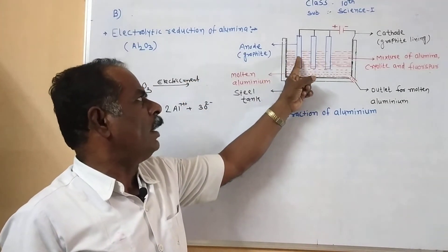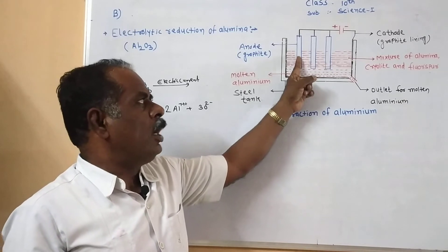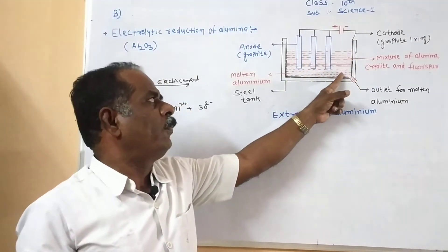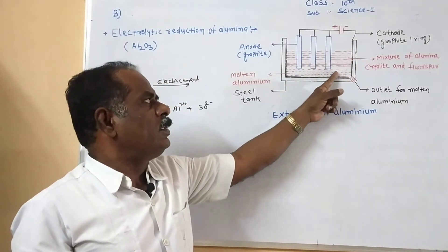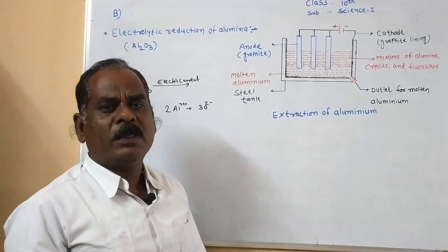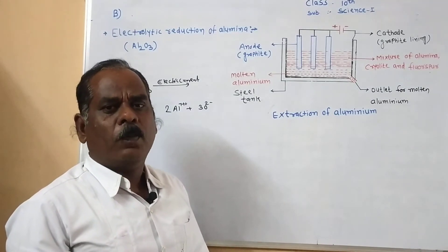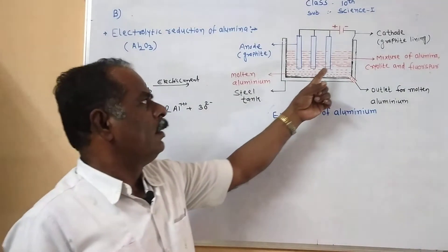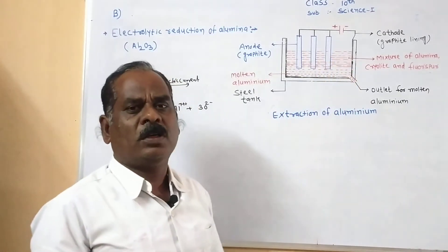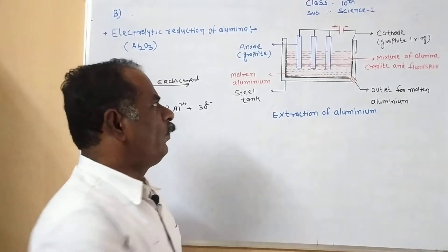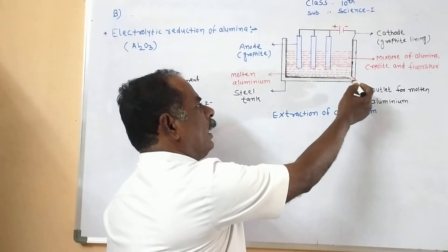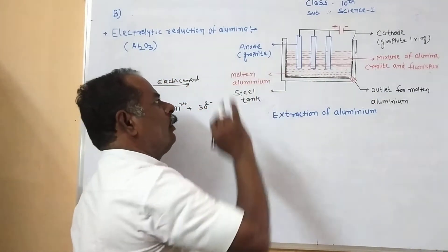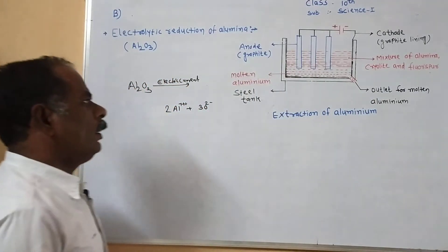In the electrolysis of alumina, oxygen is liberated at the anode and aluminium is deposited at the bottom of the steel tank, because molten aluminium is heavier than the molten electrolytic mixture. Therefore aluminium is deposited at the bottom and oxygen is liberated at the anode.